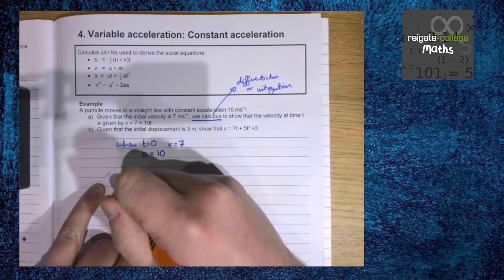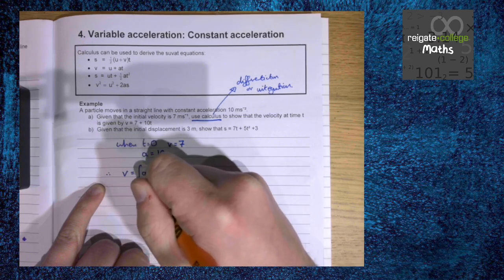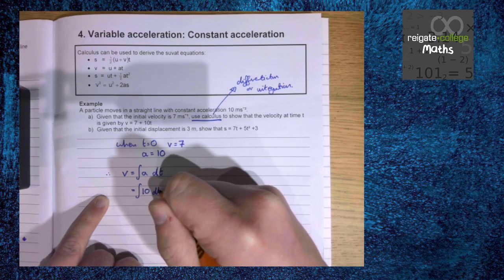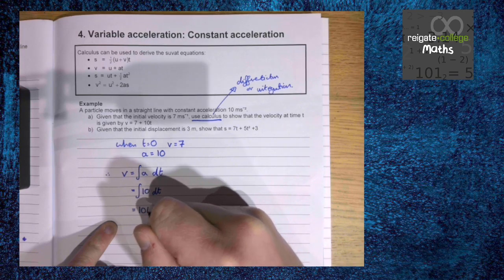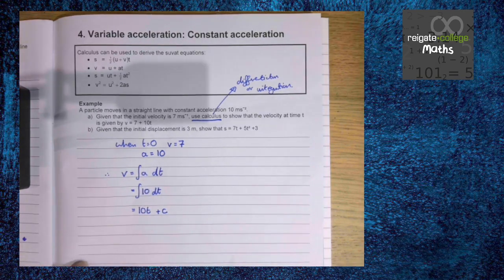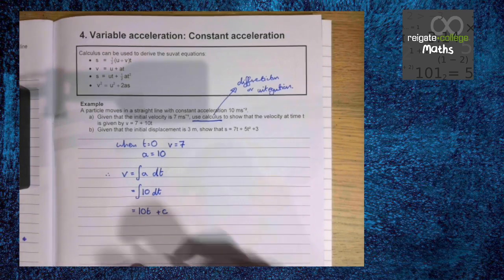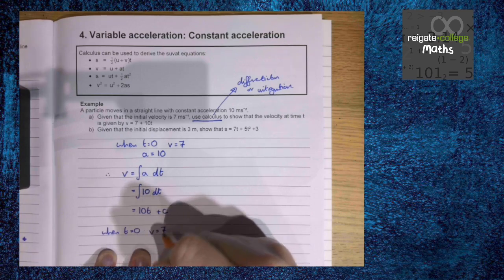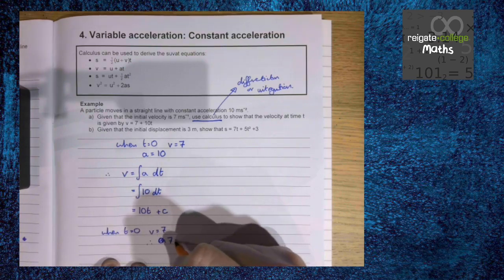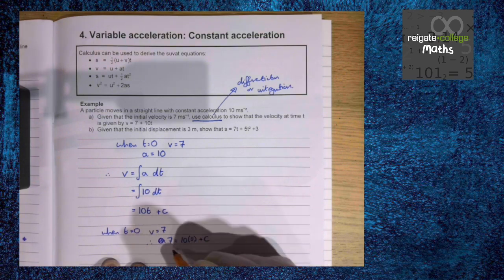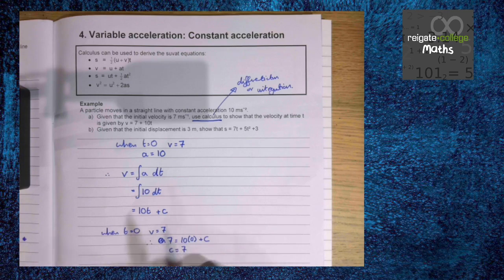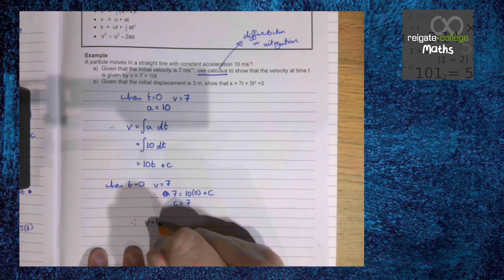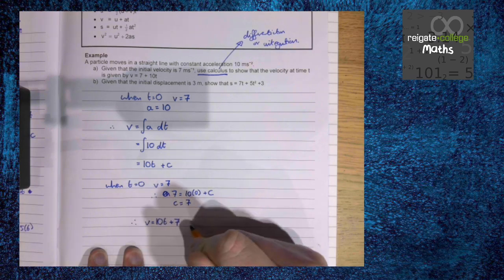We know that v is the integral of acceleration with respect to time, so it's the integral of 10. Therefore v is 10t plus c. As we've said, when t is 0, v is 7. So 7 equals 10 times 0 plus c, meaning c is 7. Therefore v is 10t plus 7 as required.